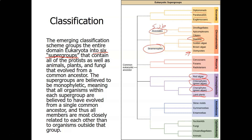The supergroup Rhizaria is only Protista, and it includes the cercozoans, the forams or foraminiferans, and the radiolarians. We already covered Archaeaplastida. The supergroup Amoebazoa includes — all of these are protozoans — the slime molds, the gymnamoebas, and the entamoebas. The Opisthokonta include fungi and animals — two other kingdoms besides Protista. The nucleareids and the choanoflagellates are the Protista within the supergroup Opisthokonta.